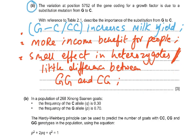Part two: the variation at position 5752 is due to a substitution mutation from G to C. With reference to table 2.1, describe the importance of the substitution from G to C. CC increases milk yield, giving more income and economic benefit for people. There is a small effect in heterozygous individuals, and little difference between GG and CG. The CC genotype produces more milk, which has more economic benefit.